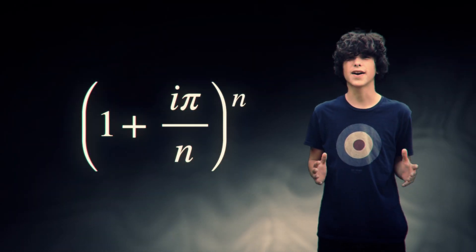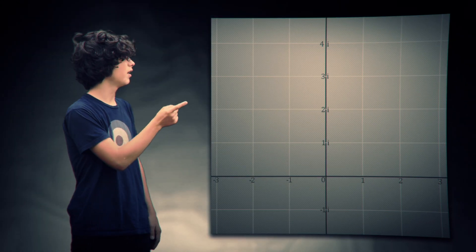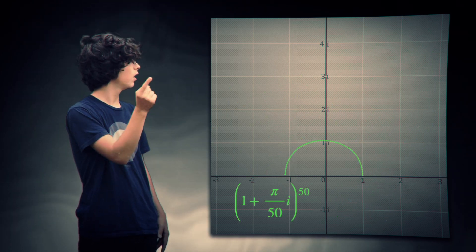And now the equation seems more clear. It is only a complex number, multiplied by itself n times. Here, n equals 1, then 2, 3, 10, 50, 100.